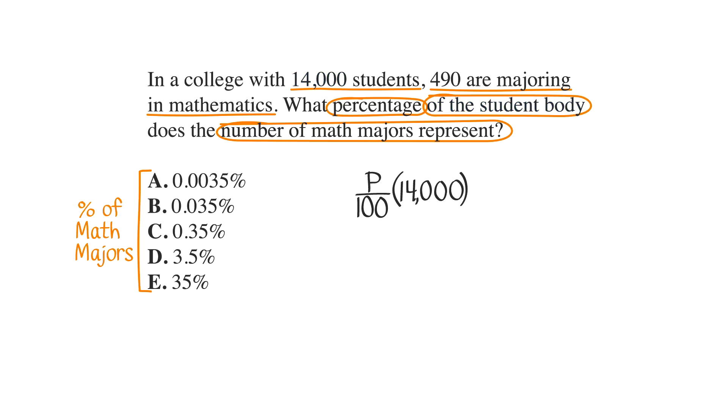The next phrase in the question says, does the number of math majors represent? We know that represent means equals, and there are 490 math majors. Now we can write our complete equation: P over 100 times 14,000 equals 490.